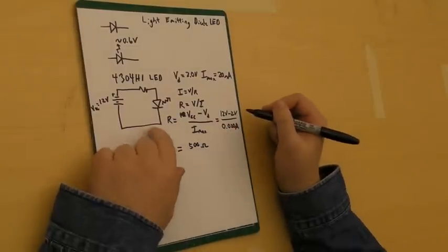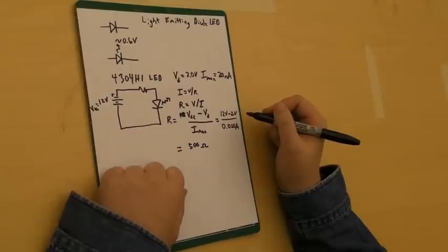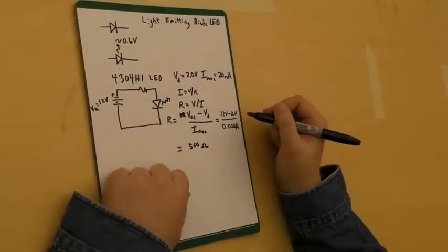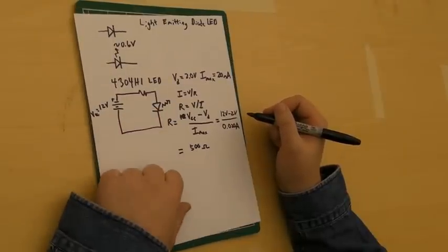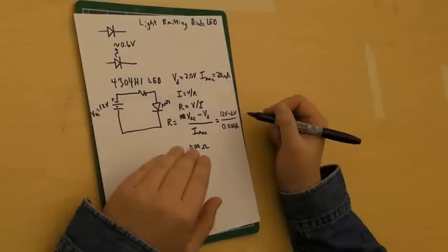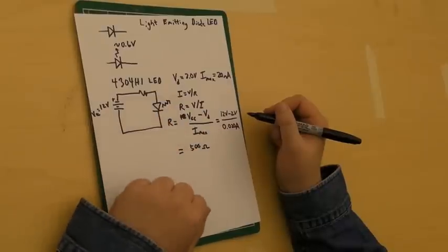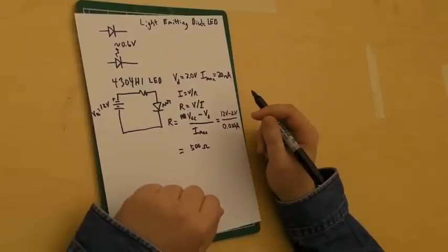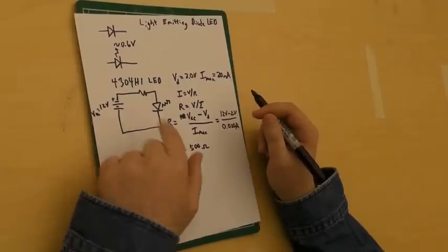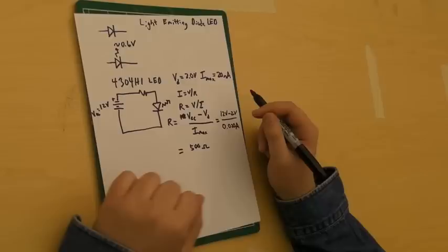So if I want to get the max brightness out of my LED, I put a 500 ohm resistor in it, minimum. Anything less than that, I risk losing my LED. Good thing to keep in mind in the future. Oftentimes, you can just estimate these things pretty quickly, but that's how you do it properly. See you next time.